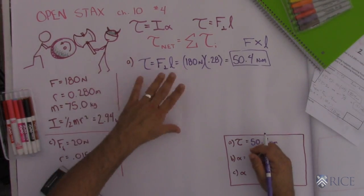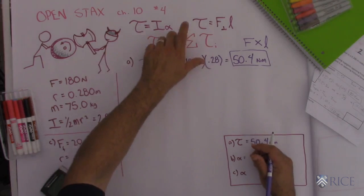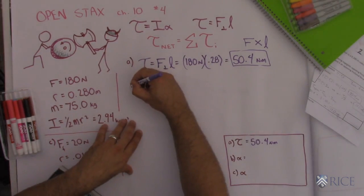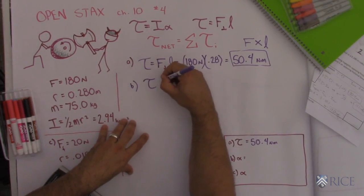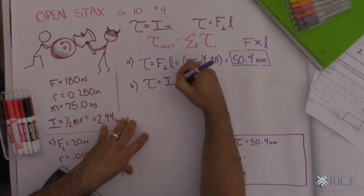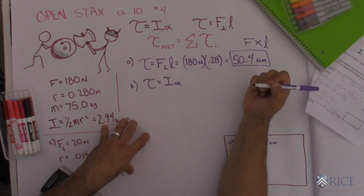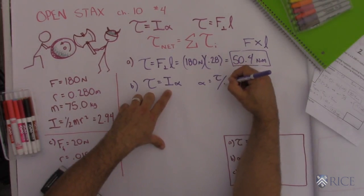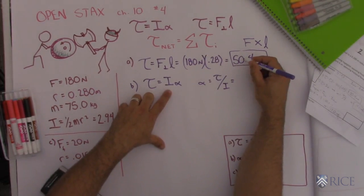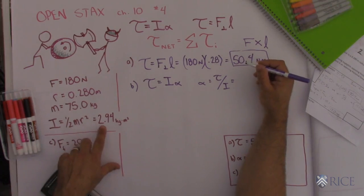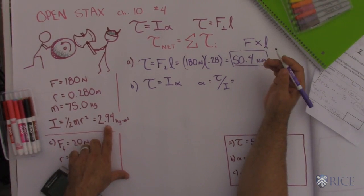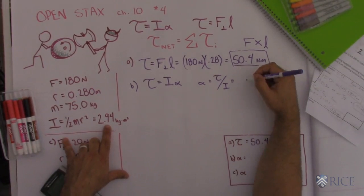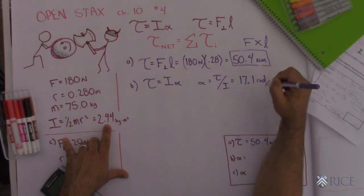To get the angular acceleration, I'm just going to use the other formula. Since torque is two different things, I could say, for part B, if I need to find the angular acceleration, I know torque is equal to the moment of inertia times the angular acceleration. So therefore, the angular acceleration is torque divided by the moment of inertia. I just found the torque. I'm going to divide by the moment of inertia of the wheel, which was 2.94. And that gives me an angular acceleration of 17.1 radians per second squared.